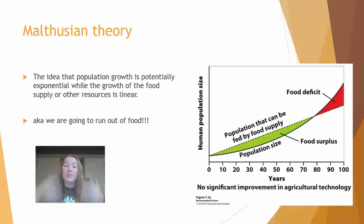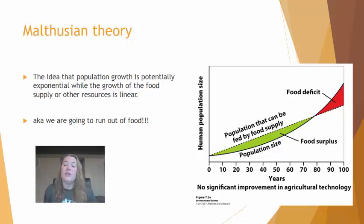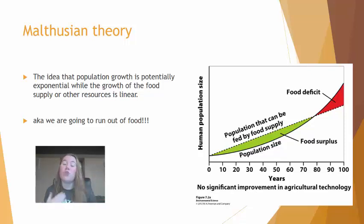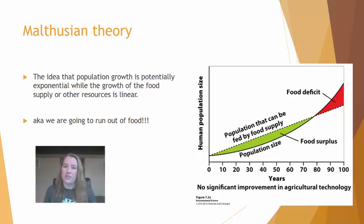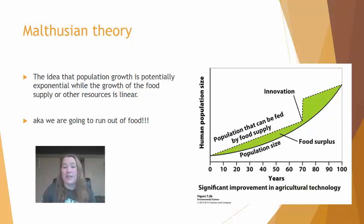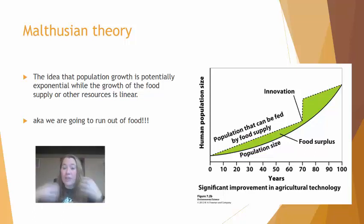Thomas Malthus came up with the idea that human population growth is potentially going to exceed the growth of our food supply. He argued that the amount of food available increases linearly, while the human population grows exponentially, creating a crossover point where we become too large for our food supply. Not everyone agrees — some think innovation will keep increasing food production to maintain a surplus, which is a very optimistic view.